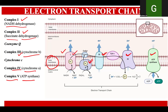In between these complexes, there are two shuttle molecules: coenzyme Q, which is also known as ubiquinone, and cytochrome C. These are present for carrying the electrons from one complex to another. Basically, they are acting like a shuttle service, taking up the electrons from one complex and delivering them to the next one.